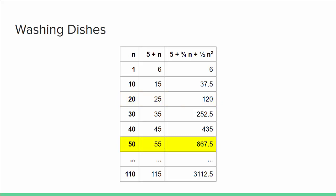For 50 dishes, the careful algorithm takes less than an hour, while the sloppy algorithm takes over 11 hours, and at 110 dishes, the careful algorithm is still under 2 hours, while the sloppy algorithm would take over 2 days. Clearly, it pays to be careful.